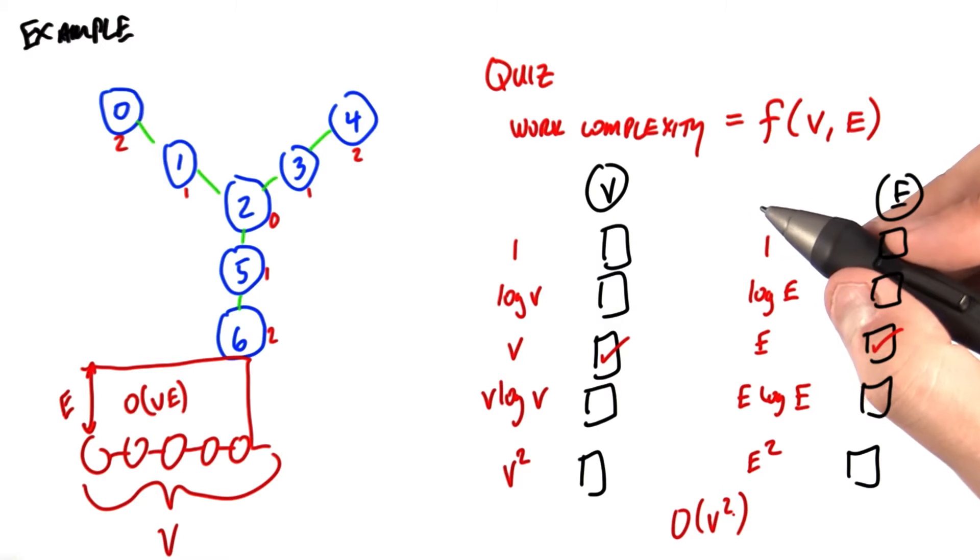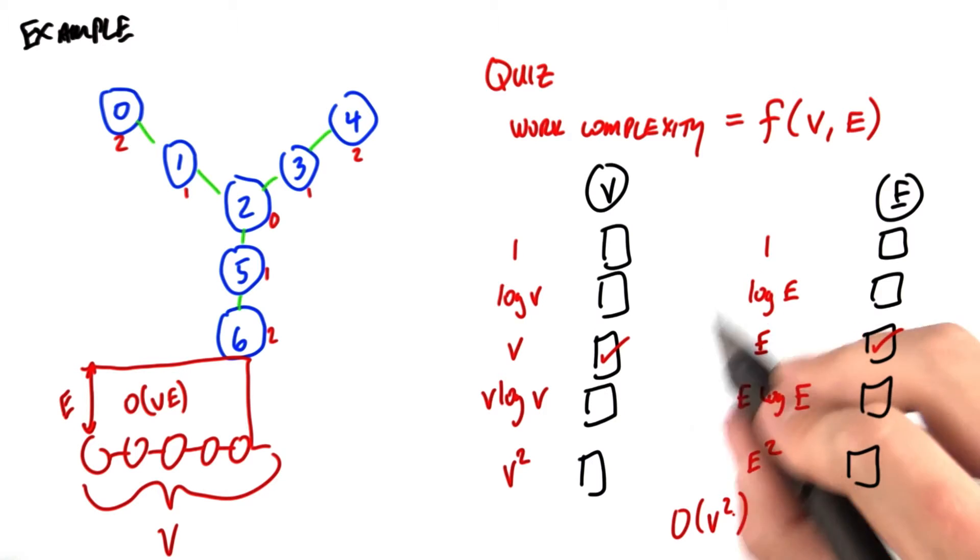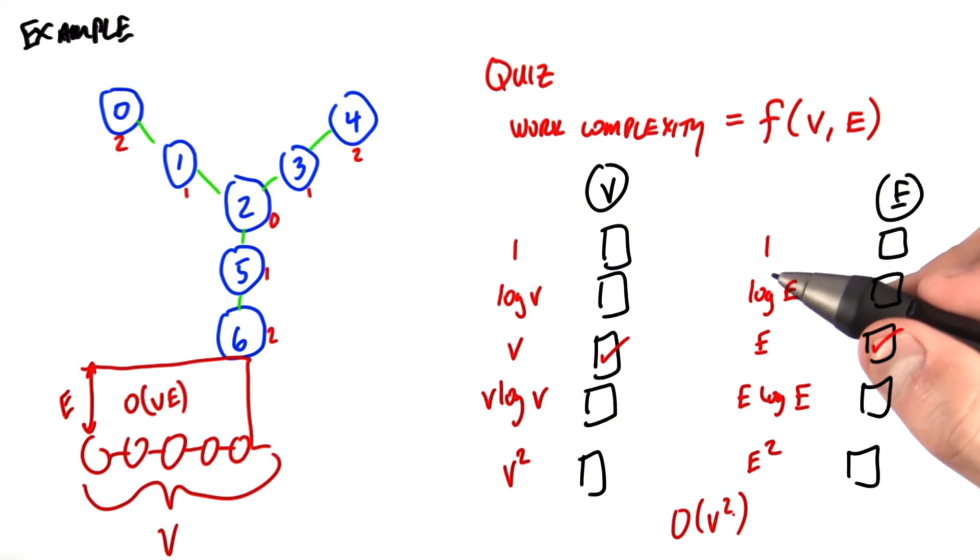It's quadratic in the number of vertices, and that's bad. That is a very bad property. So I told you at the beginning of the discussion here that this was a crummy algorithm, and this is why. We really do not want an algorithm that is quadratic in the number of vertices.